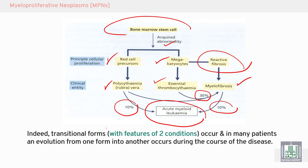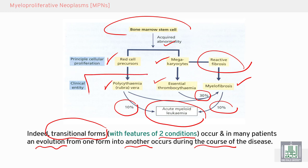They are transitional forms, meaning there are primary and secondary conditions — evolution and development from one condition to another during the course of the disease. Starting with polycythemia vera as the primary condition, going to a secondary condition evolved into acute myeloid leukemia during the course of the disease.